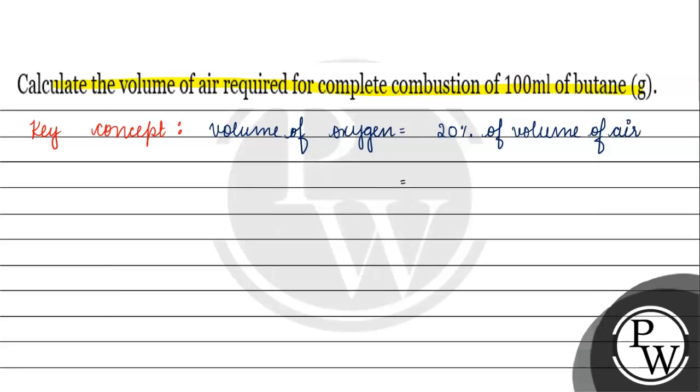So what can we say? 20% of the volume of air is equal to 5 into volume of oxygen.